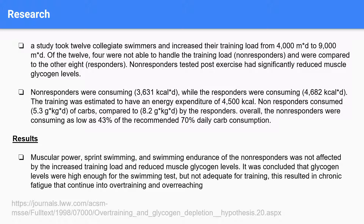In addition to not consuming enough calories overall, the non-responders only consumed 5.3 grams per kilogram body weight of carbs compared to 8.2 grams per kilogram body weight by the responders. Overall, the non-responders were consuming as low as 43% of the recommended 70% daily carb consumption. There was also a finding where muscular power, sprint swimming, and swimming endurance of the non-responders was not affected by the increased training load and reduced muscle glycogen levels. It was concluded that glycogen levels were high enough for the swimming tests, but not adequate for training.